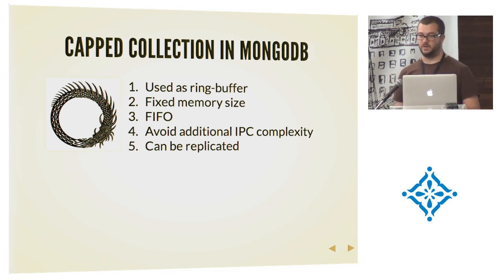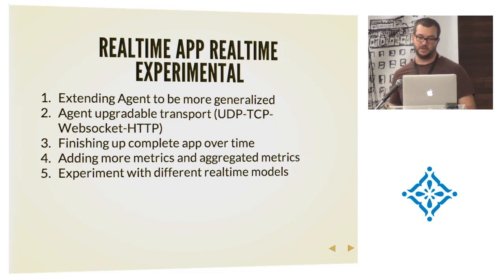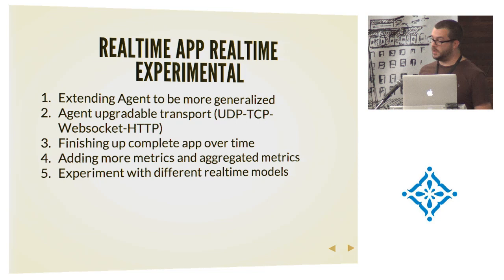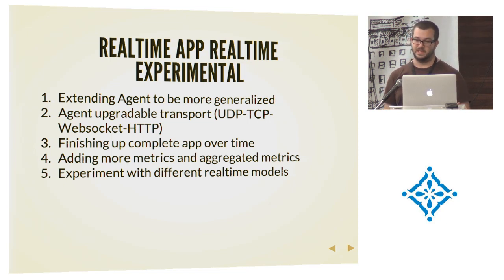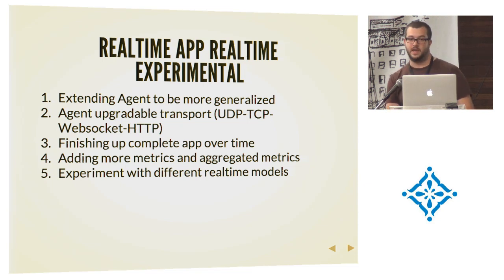It can also be replicated, which means you can potentially read from the secondaries or slaves. The experiment was very useful and I'm hoping to keep extending it. I want to make the agent more generalized so people have an example to look at when they want to start collecting their own metrics. The agent has a partially upgradeable transport — it will try UDP, and if UDP is not available try TCP or WebSockets and finally fall back to HTTP. I need to add more metrics and aggregated metrics, and I want to experiment with a couple of different real-time models.